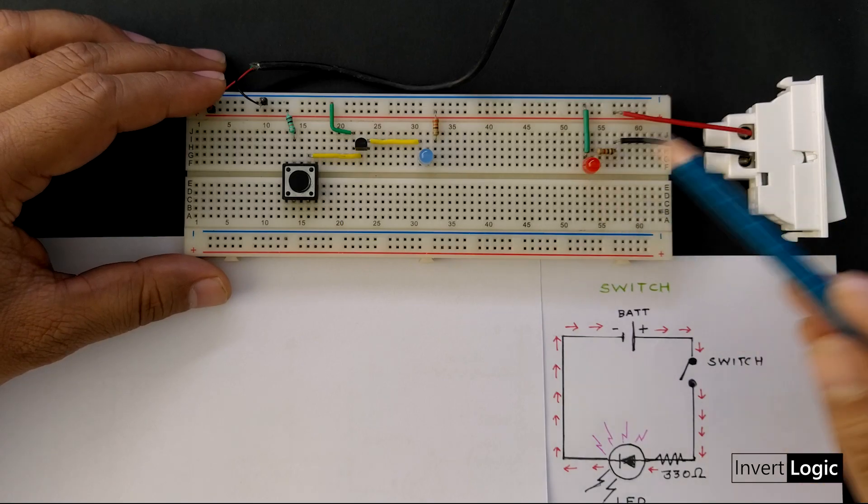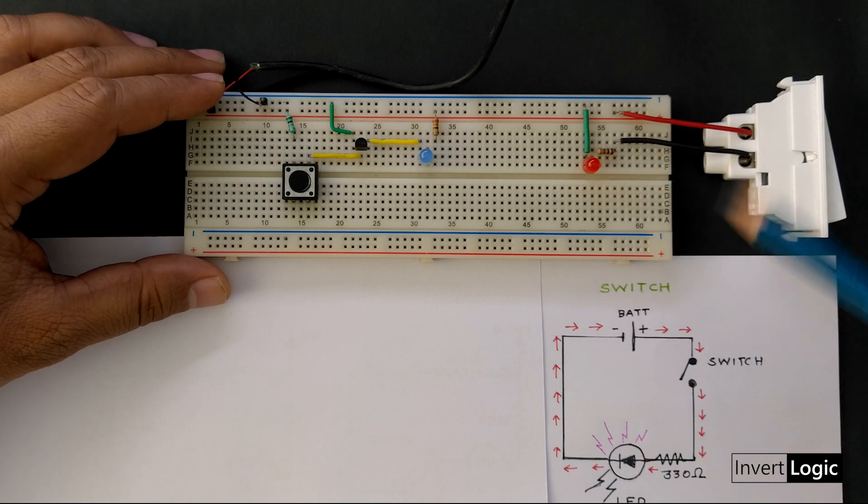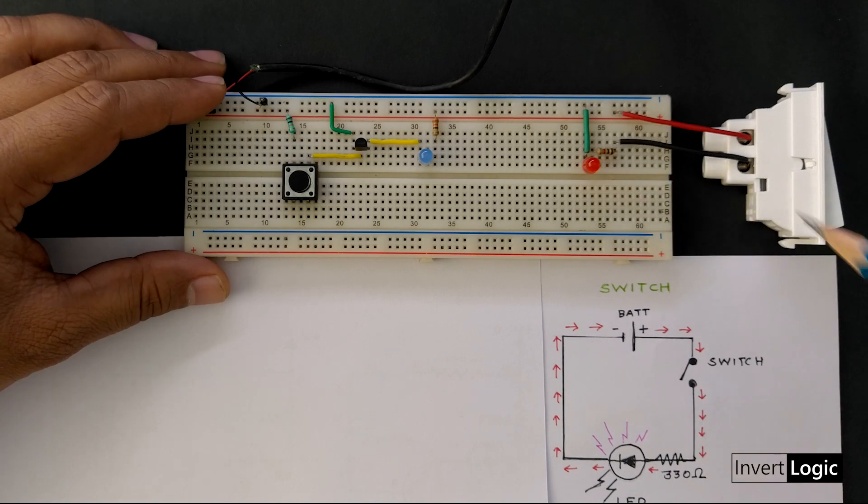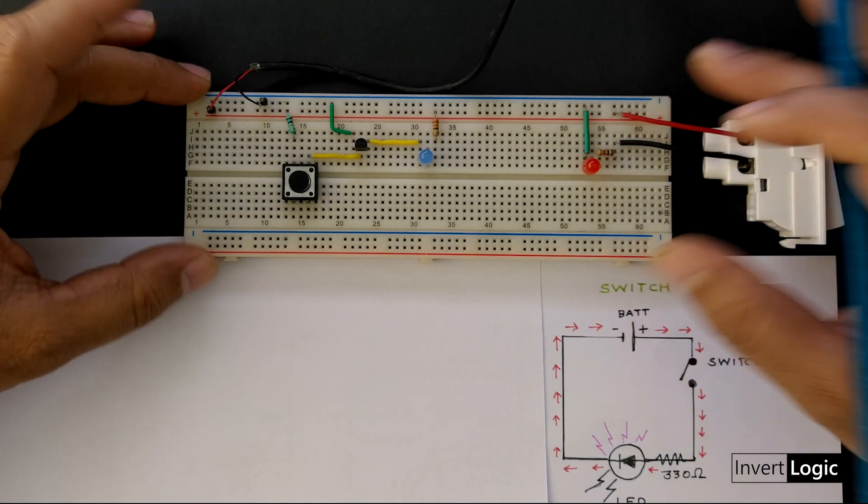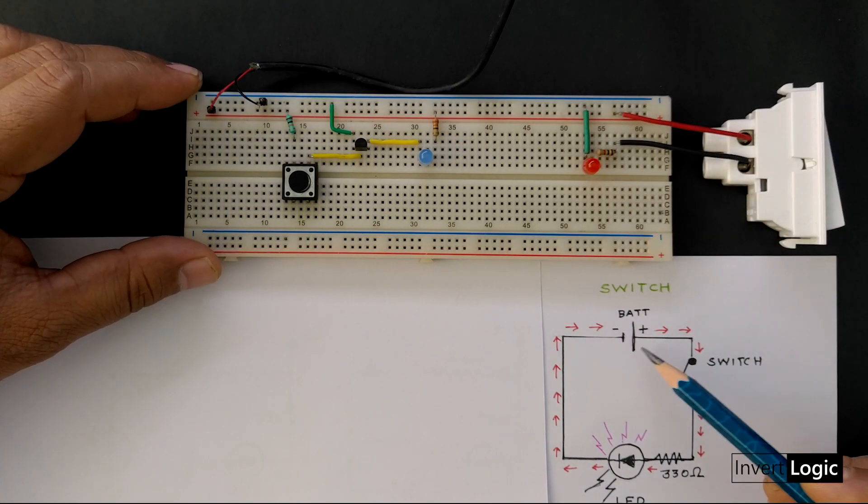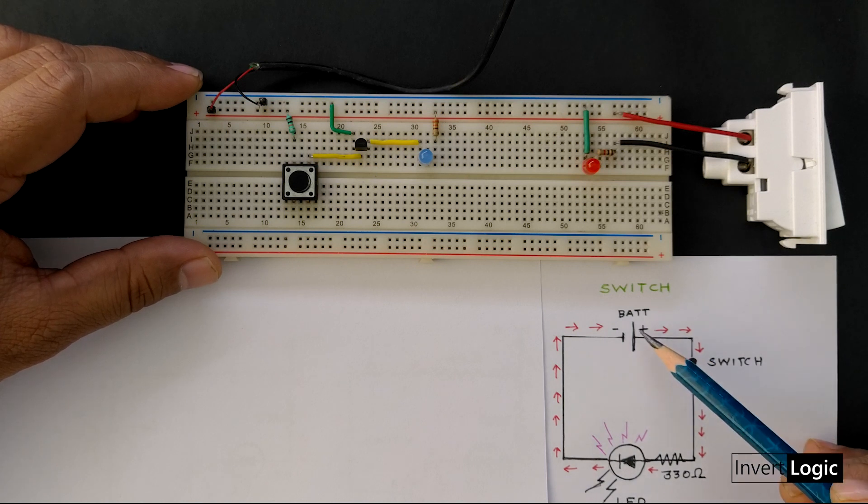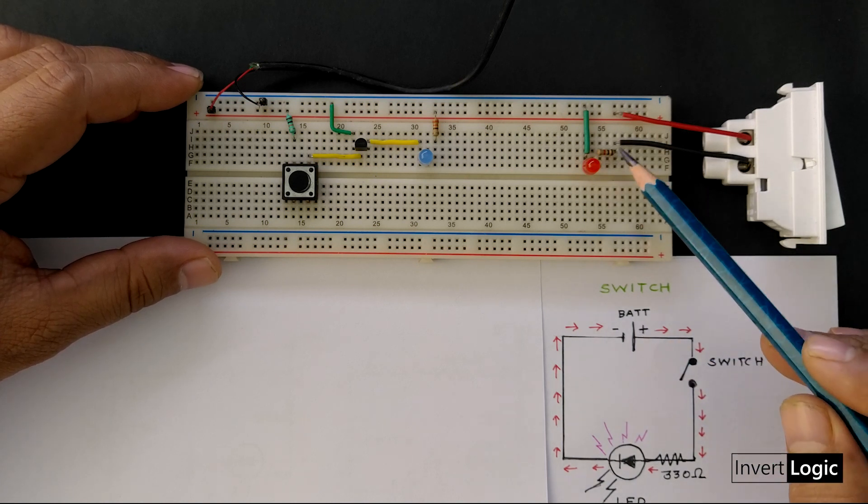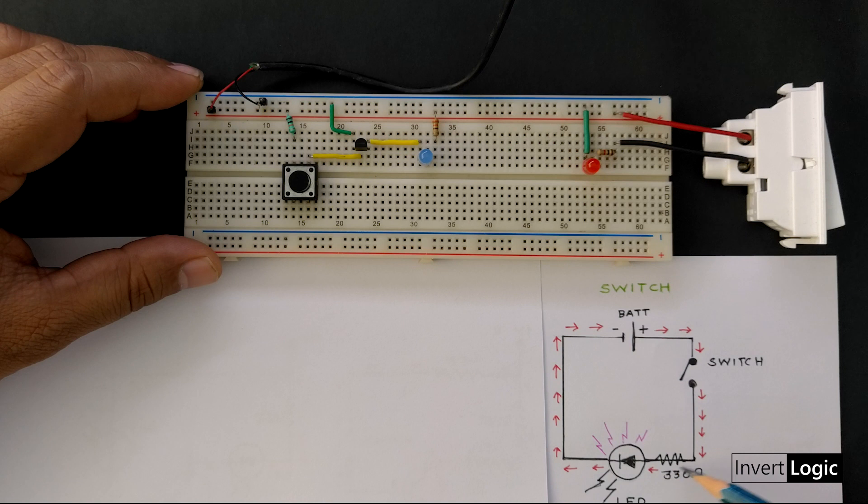So in this example, what we have is a simple switching circuit. We have this breadboard here and it is connected to the 5 volt power supply. So according to this diagram, we are connecting the plus 5 volt to the LED through this resistor.